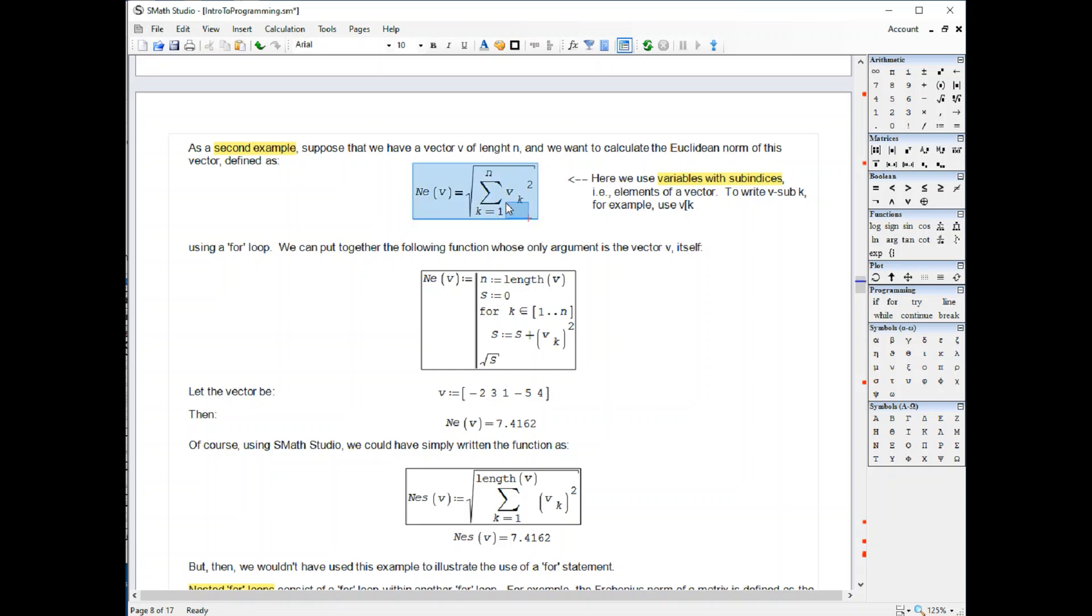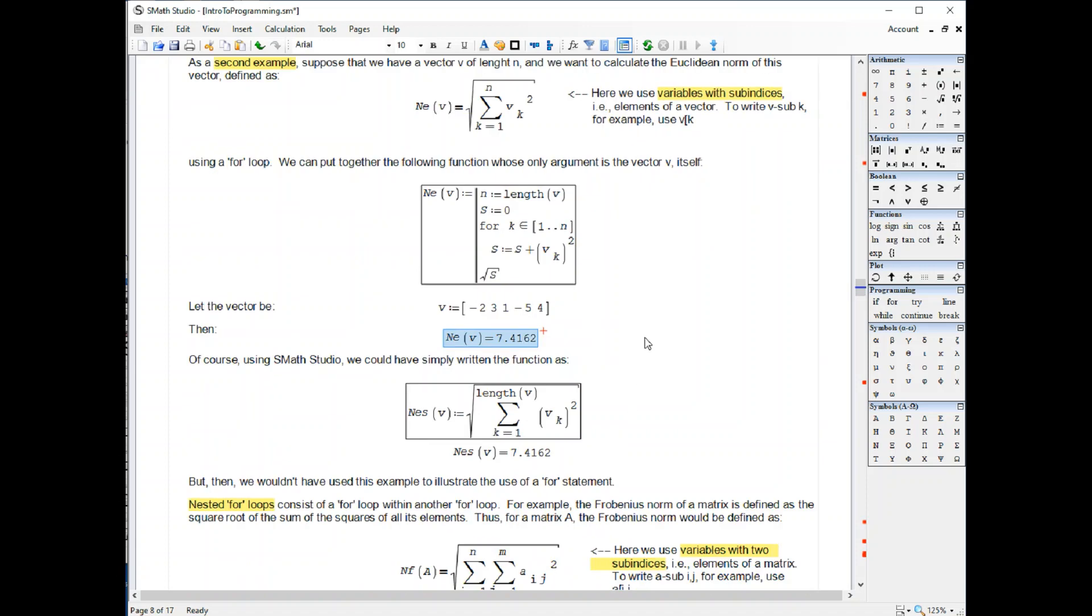So you can just type this statement in SMath Studio, but I just want to show you the use of a for loop. I'm including a line here that calculates the length of the vector, initializing the sum to 0, and then for k between 1 and n, add v k squared, and then the square root of that will be what is reported, and that's the Euclidean norm.